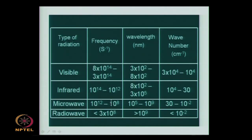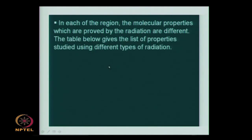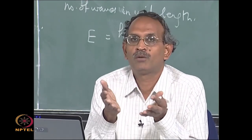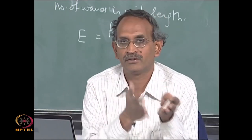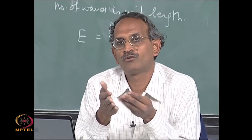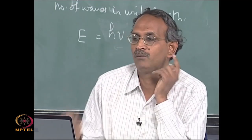For the UV, visible, and IR regions, a table of approximate wave number ranges is provided. For UV and near UV, the range is approximately 10⁶ to 50,000 cm⁻¹, and similarly for near UV, visible, near IR, mid IR, and far IR. These divisions are approximate — there is no sharp boundary. The key point is that in each region, different molecular properties are responsible for the observed spectrum.